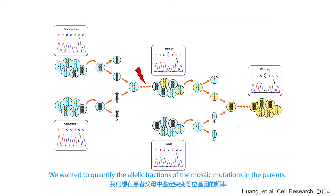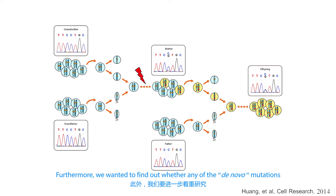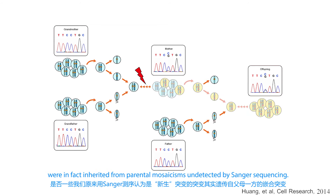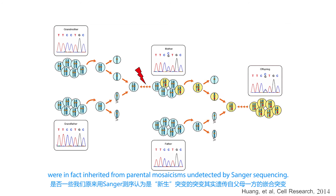We wanted to quantify the allelic fractions of the mosaic mutations in the parents. Furthermore, we wanted to find out whether any of the de novo mutations were in fact inherited from parental mosaicism undetected by Sanger sequencing.